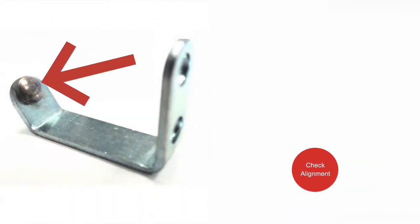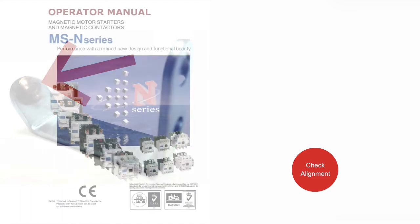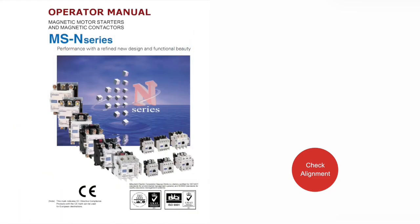Sometimes the contact pads are crowned or have a radius like this contact. This is not a concern as long as the alignment is good. You can push down on the movable contact holder to check the alignment as it mates with the stationary contacts. There should be as much contact as possible. If misaligned, the contact alignment should be adjusted according to the manufacturer's instructions.